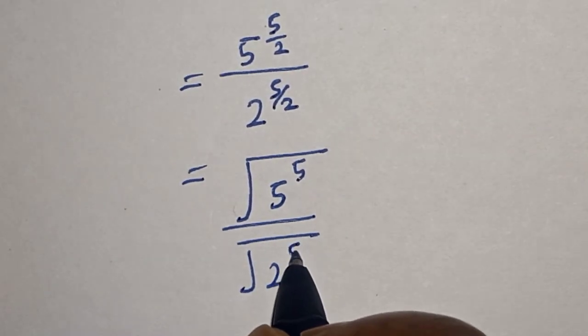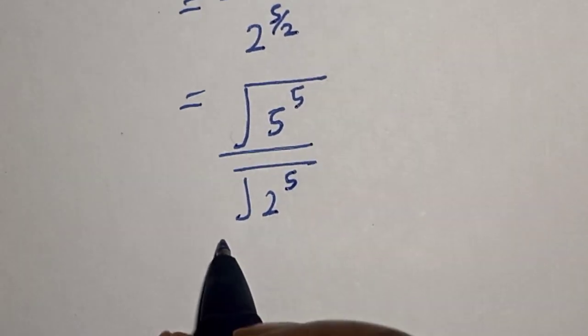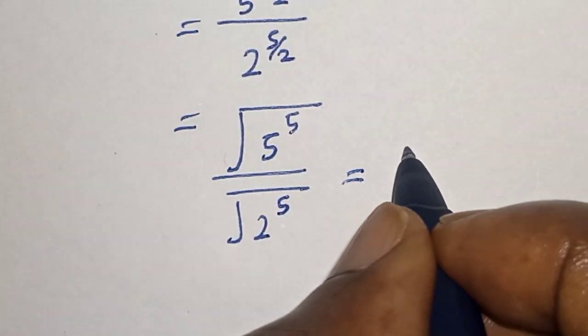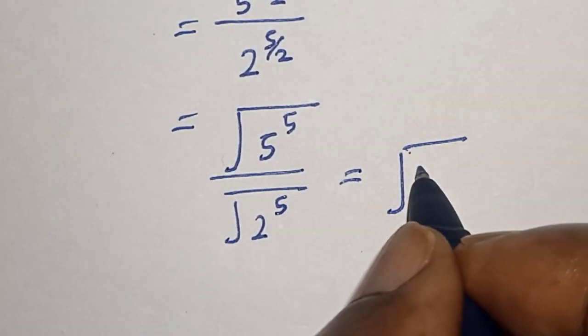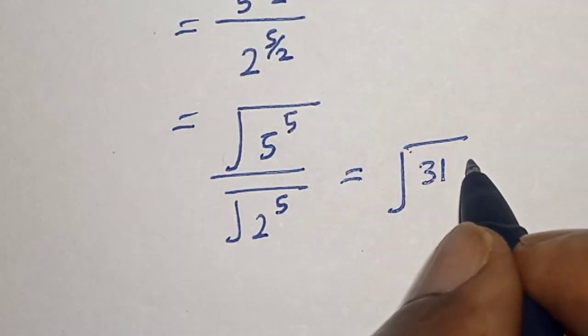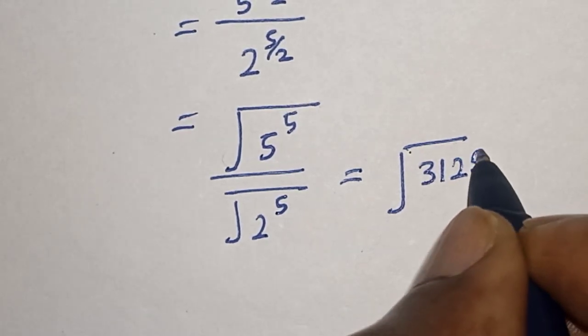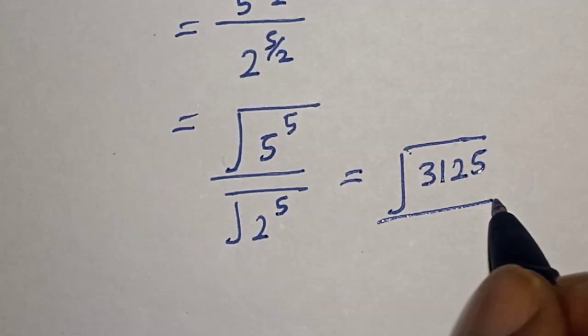Then this equals the square root of 3125 over the square root of 32, where 5^5 = 3125 and 2^5 = 32.